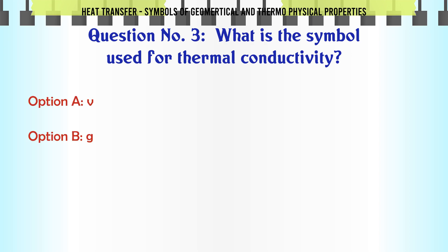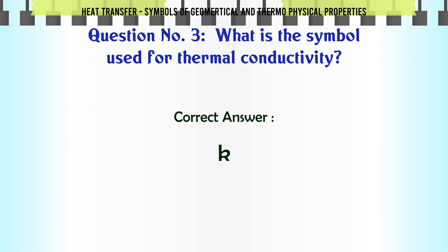What is the symbol used for thermal conductivity? A: V. B: G. C: H. D: K. The correct answer is K.